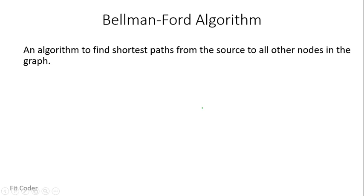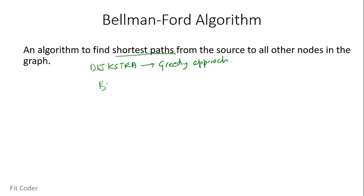Bellman-Ford algorithm is used to find the shortest path from the source to all other nodes in the graph. We have seen one more similar algorithm, which was Dijkstra. Dijkstra works on a greedy programming approach. But the Bellman-Ford algorithm works on a dynamic programming approach, where the problem is divided into smaller sub-problems and the optimal solution of the overall problem depends on the optimal solution of its sub-problems.